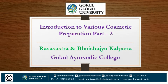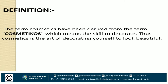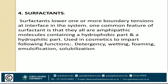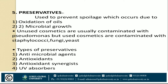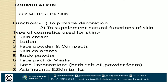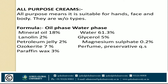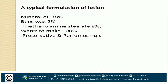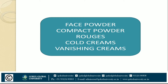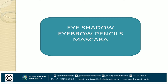Today we will be continuing with Introduction to Various Cosmetic Preparations Part B. In the previous session, Part A, we dealt with the introduction, definition, classification of cosmetics, main ingredients of cosmetics and their properties, plant materials commonly used for cosmetics, functional raw materials, formulations used as cosmetics for skin creams, lotions, powder, cosmetics for hair, nails and eyes, and the preparation of face powder, compact powder, rashes called cream and vanishing cream.